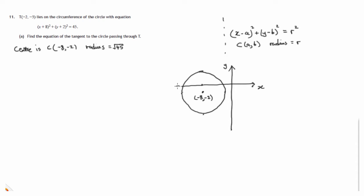And then let's try and pinpoint where this point T is. 2 to the left, 5 down, maybe somewhere down here, (-2, -5). And the tangent that we're looking at then would look like this, just touching the circle at the point T.